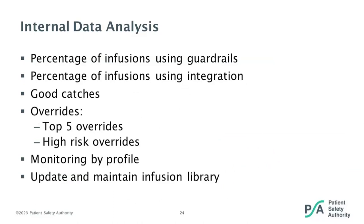Our organization is working on these goals. Some examples of metrics that may be useful to track include the percentage of infusions programmed with guardrails and the percentage programmed with EHR integration. Tracking good catches or near misses may also reveal areas of opportunity, as well as overrides — which may be broken down by library profile. As noted in the Joint Commission and ISMP guidelines, importance is placed on updating and maintaining the smart pump library.